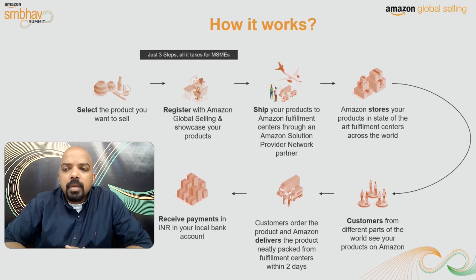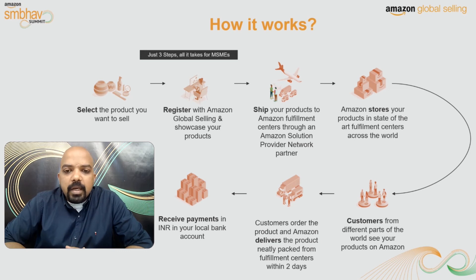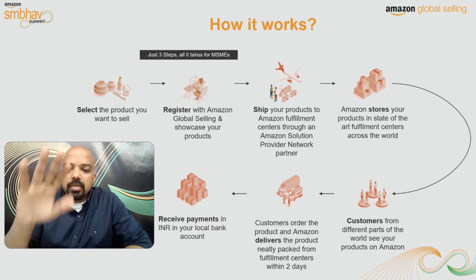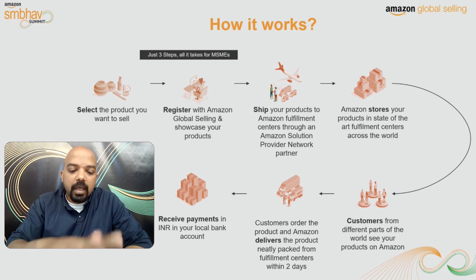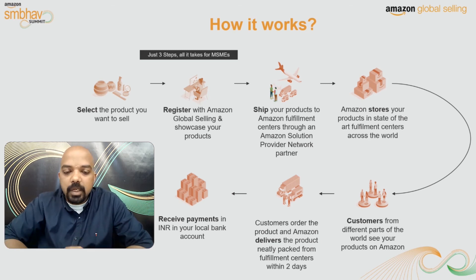Whatever products get sold on the platform, you receive payment in your local bank account in Indian rupees. This slide summarizes the end-to-end steps in your global selling journey: selection, then registration, then listing your products, sending products to the Amazon warehouse, products go live, customers order, Amazon fulfills from warehouse to customer, and you receive payment in your local bank account. It's a very simple end-to-end process.